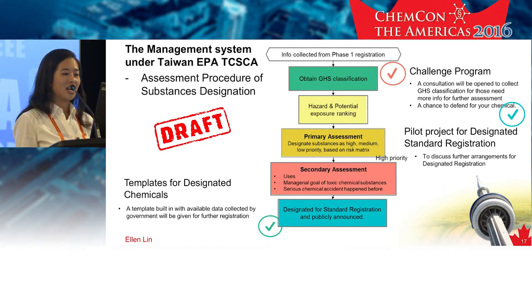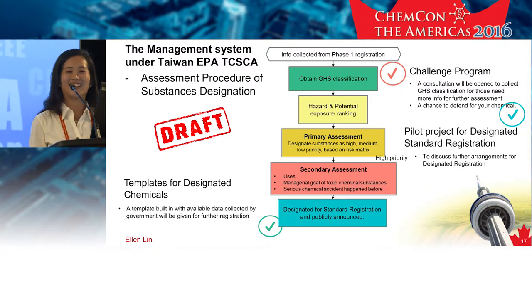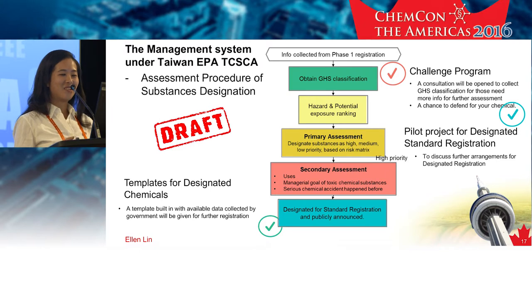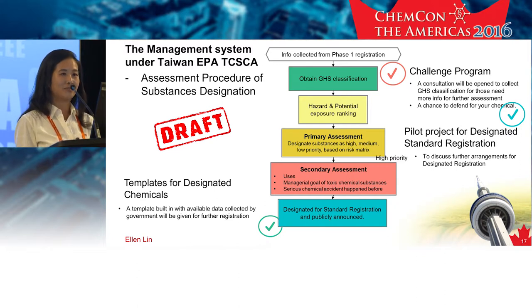We call it a challenge program — an idea inspired by CMP. We provide a chance for industries to defend their chemicals and provide GHS classification information. Since most of our companies are small and medium-sized industries, our government will collect available data results and also extend some of the data requirements accordingly. We believe it makes no sense to do the same test again if there are already clear and reliable results available.